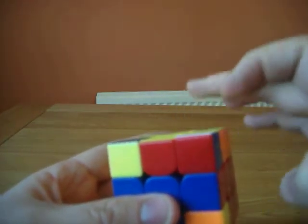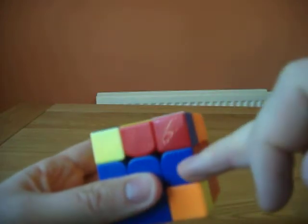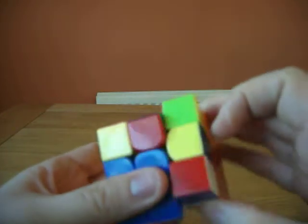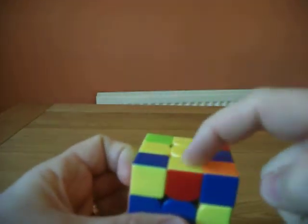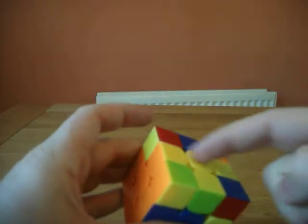So you can do the algorithm again to swap these two and this one will pop into the slot. So if you do the algorithm now, red and orange is now opposite each other. So that's correct.